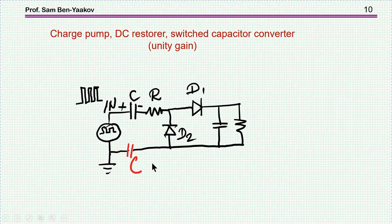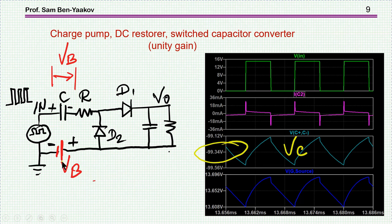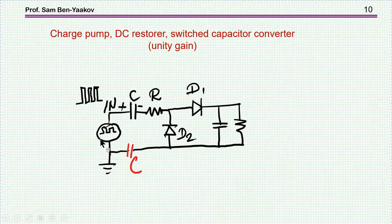As I have said, you must have an AC path, because if there is no AC path, this circuit cannot work — there is no closure of the current; the current cannot flow. Here it's okay, because the voltage source can carry AC too, there is no problem in that. But if we have a high impedance here, then this circuit actually cannot work.